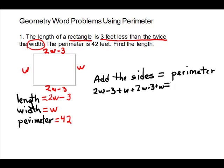The perimeter they gave us is 42. Now we put like terms together: 2w plus w plus 2w plus w gives us 6w. Then we put the constants together: minus 3 minus 3 gives us minus 6. So our equation simplifies to 6w minus 6 equals 42.